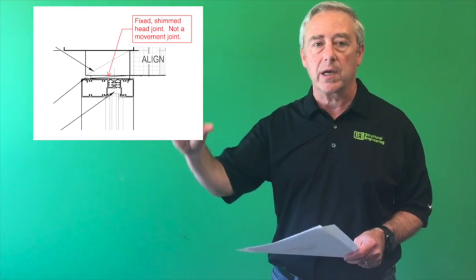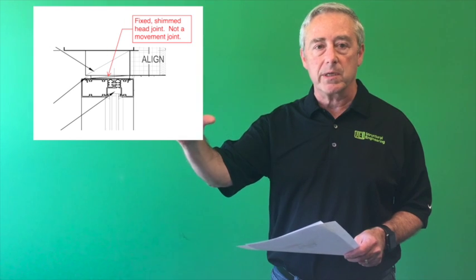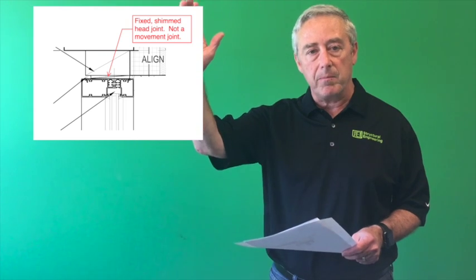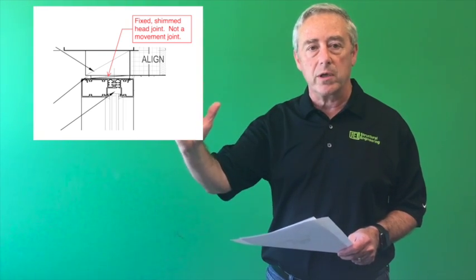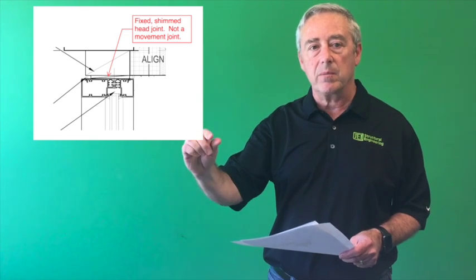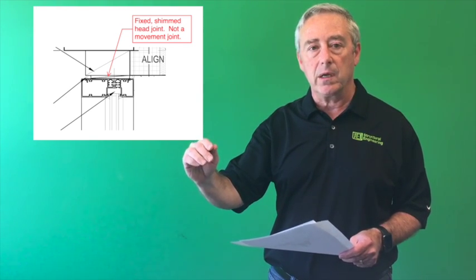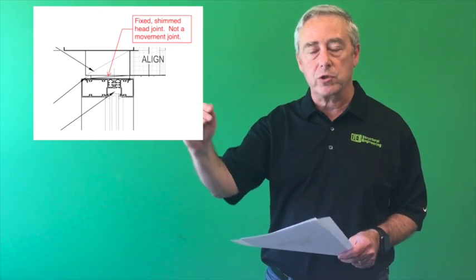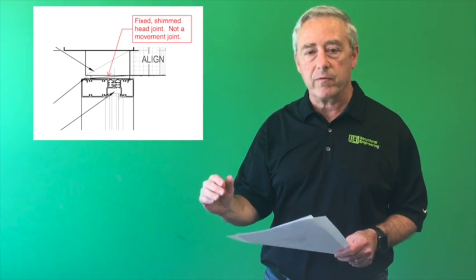You can see that there is wood blocking or something solid up at the top and that's interfacing the structure. It may have a beam that's up there and that beam carries that movement on down and you can see that there's a shim, a solid shim that occurs in between the glazing system and the building structure. So watch out for that.